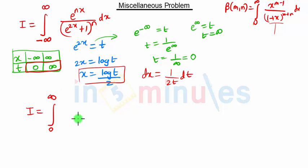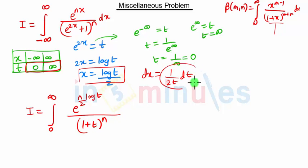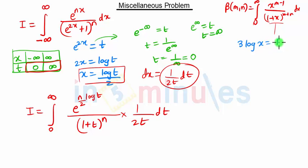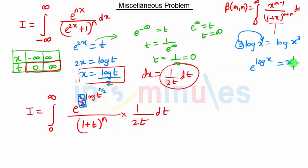e raised to nx — that term is 1 upon 2 log t — upon e raised to 2x, which is t, so 1 plus t the whole raised to n, and dx is 1 upon 2t dt. We know the log property that n log x is nothing but log of x raised to n, so we take n by 2 into the power of t, giving t raised to n by 2. And since e raised to log of x is simply x, e raised to log of t raised to n/2 is just t raised to n/2.